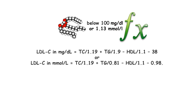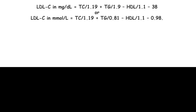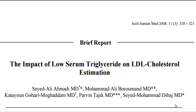If triglycerides fall below 100 mg/dL, an alternative formula should be used: LDL-C (mg/dL) = TC ÷ 1.19 + TG ÷ 1.9 − HDL ÷ 1.1 − 38, or in millimoles per liter: LDL-C = TC ÷ 1.19 + TG ÷ 0.81 − HDL ÷ 1.1 − 0.98. Reference: "The impact of low serum triglyceride on LDL cholesterol estimation," published in Archives of Iranian Medicine, 2008.